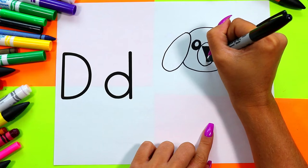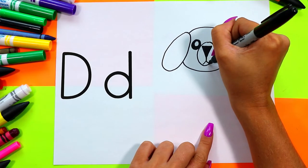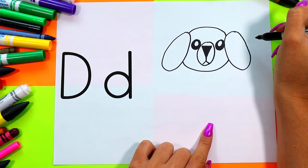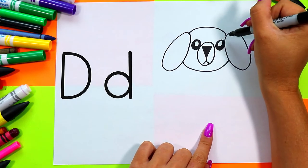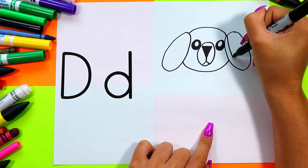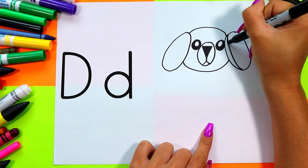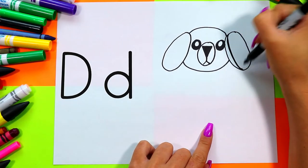On the snout draw one line down and two lines out on an angle. On the ears we're going to draw a second line down for the folds of the ears.